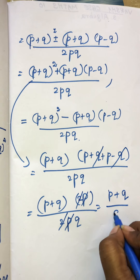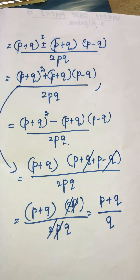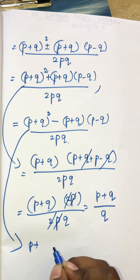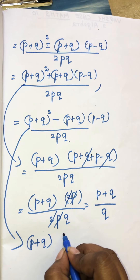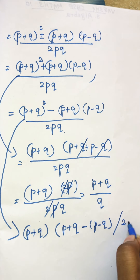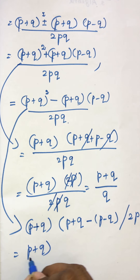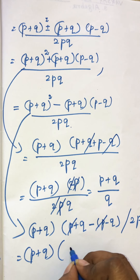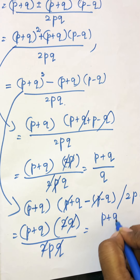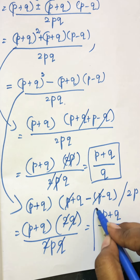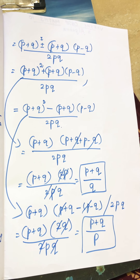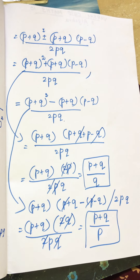So the first answer is x equals (p plus q) divided by q. For the second term, taking (p plus q) as common again with the minus sign: p minus p cancels leaving 2q, and 2q cancels with 2pq leaving p. So the second answer is x equals (p plus q) divided by p. These are the two values. This is not a difficult sum — it's quite easy, but practice it 2 or 3 times. Thank you students.